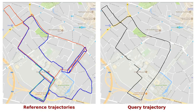On the left you can see GPS coordinates of the reference trajectories. They are shown with different colors and have different shapes and lengths. The query trajectory on the right will follow one or several reference trajectories as well as deviate from a previously mapped area.